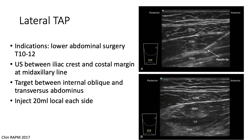Because of the high volume of local anesthetic used for these blocks — typically anywhere from 40 to 60 mils of 0.25% bupivacaine — the patient needs to be monitored for LAST. It's also important to visualize the needle throughout the entire procedure to avoid accidental perforation of the peritoneum or bowel. Remember that the peritoneum is right below the transversus abdominis muscle.